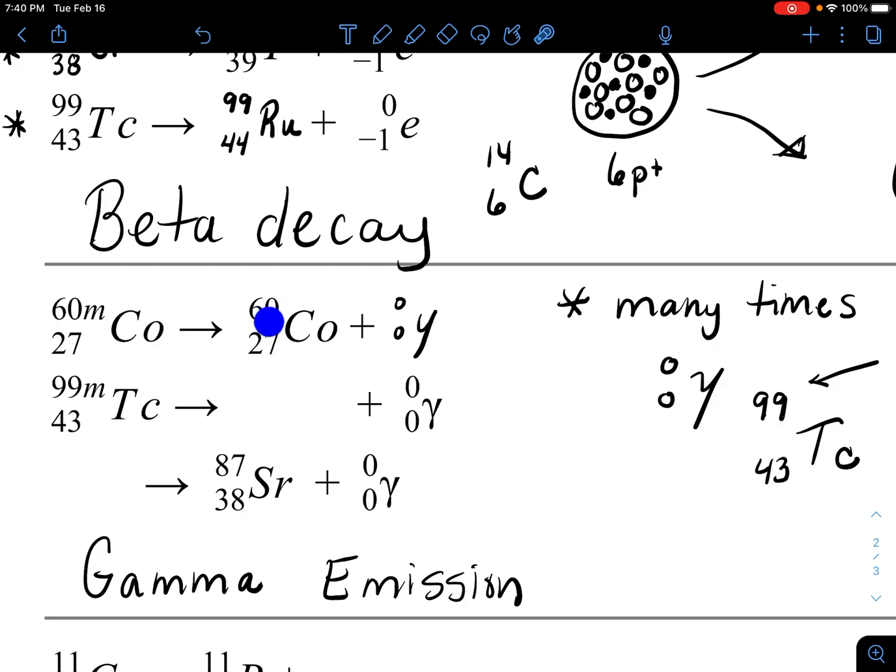Next is technetium, same thing we just did this one, so it's technetium-99, you just lose the m and then 43. And then last but not least, what if we had to predict what it started out with as a reactant. So again, 38 is the atomic number for strontium and then maybe it was 87, and then maybe it was again a metastable.